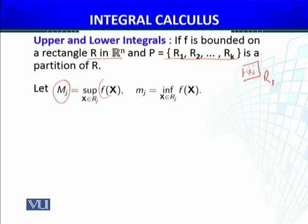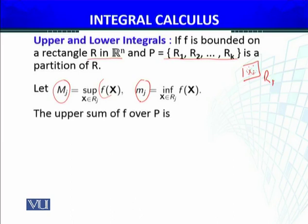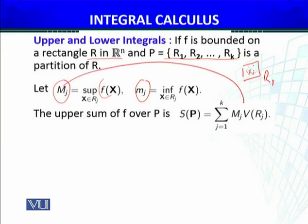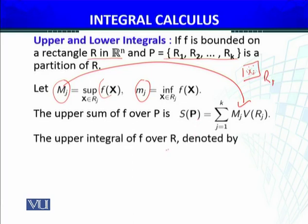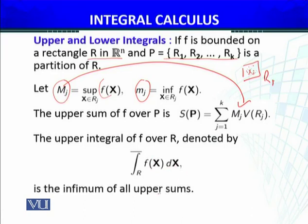Similarly, on the same sub-rectangle R_j, the infimum — the lowest value — of F(x) over R_j is denoted m_j. The upper sum of F over partition P is defined using the maximum values M_j. The upper integral of F over rectangle R, denoted by the corresponding notation, is the infimum of all upper sums over all possible partitions P.